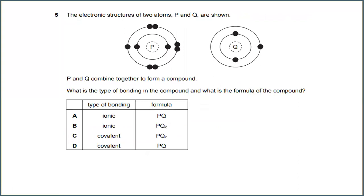Number 5. The electronic structure of two atoms P and Q are shown. P and Q combine together to form a compound. What is the type of bonding in the compound and what is the formula of the compound? The type of bonding is ionic bonding, and the formula for this is PQ. The answer for this is A.